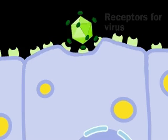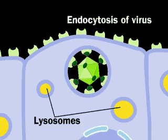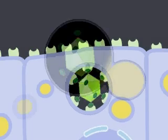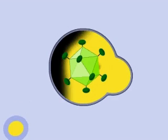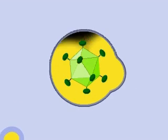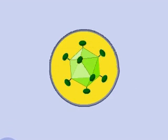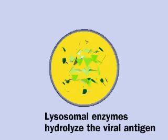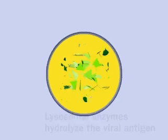A cell infected by a virus may degrade viral proteins. Class 1 MHC proteins bind bits of viral protein and transport them to the cell's surface for display. A cell displaying such foreign antigens on its MHC proteins is called an antigen-presenting cell.